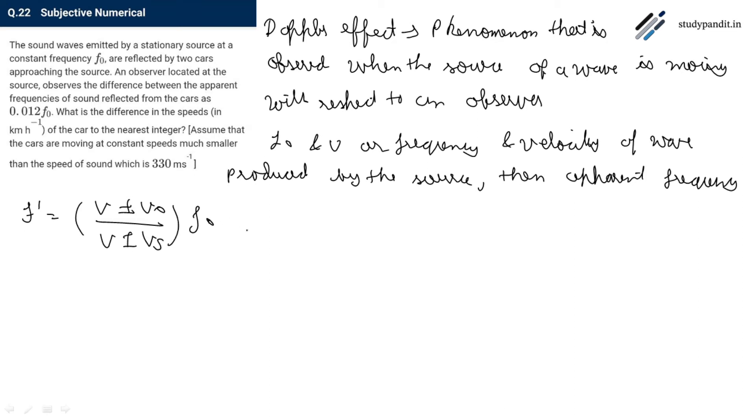Where V0 is the velocity of observer and Vs is the velocity of source.